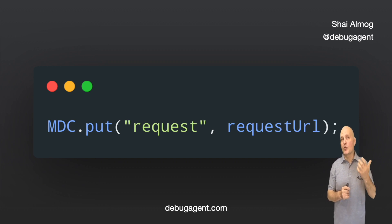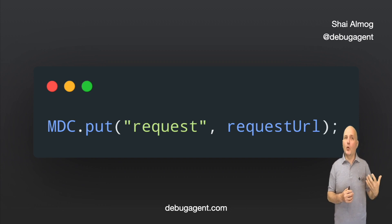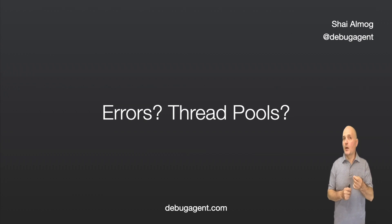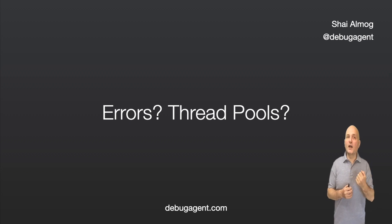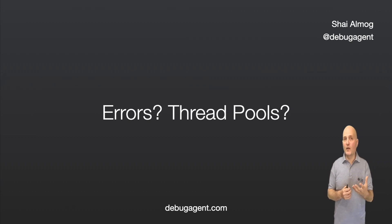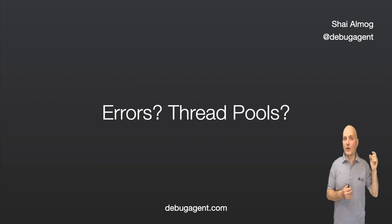The command puts the request into the current thread local. That way the URL requested by one user won't be confused with the URL requested by another user. There are several cases where this can become a problem. If there's an exception, the thread will be left with the previous request data. If we have a log before the request, it might include the URL of some random request, simply because the thread was recycled from the same pool.